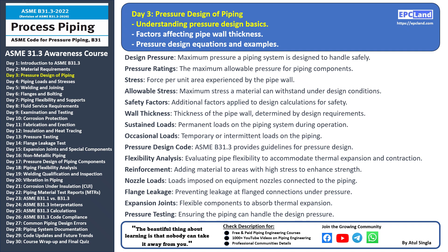These safety factors provide an extra margin of safety in the design. Wall thickness is a critical design parameter, determined based on factors such as design pressure, material properties, and safety factors. The right wall thickness ensures safe handling of the specified pressure. Sustained loads are permanent loads the piping system experiences during operation, while occasional loads are temporary or intermittent. Both types must be considered in the design to ensure the system's stability and longevity.